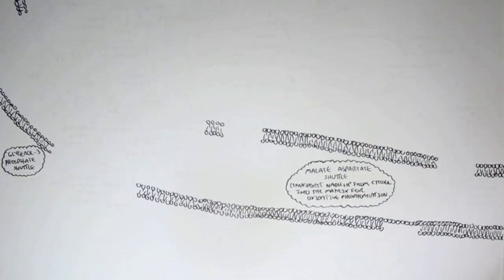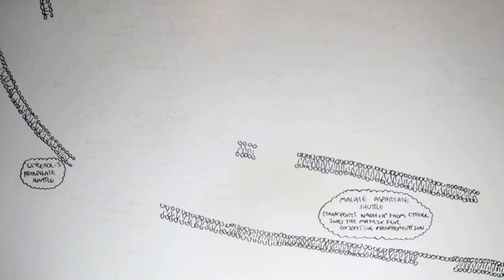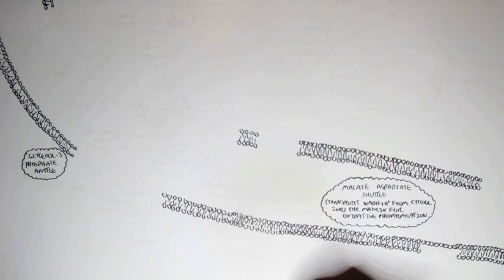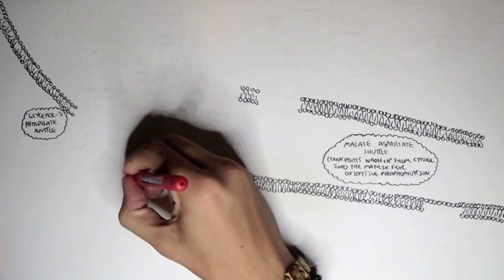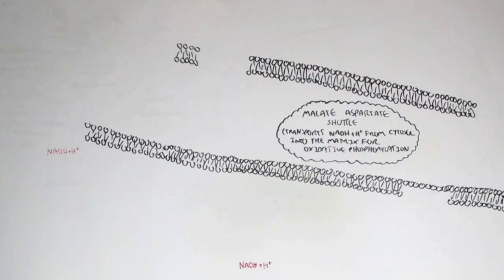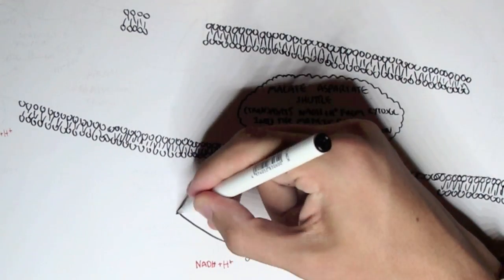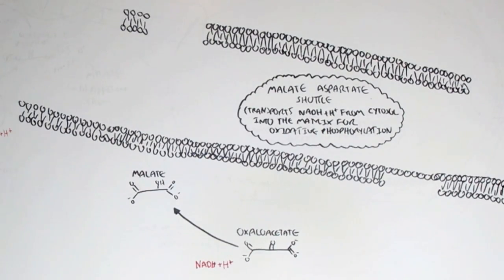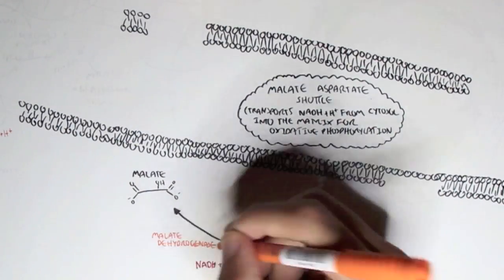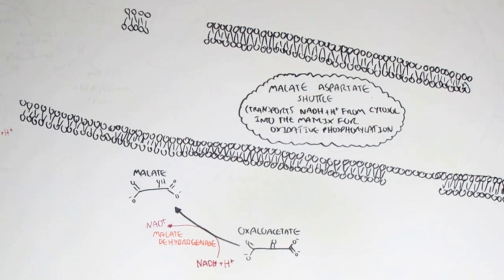Let us begin by saying that NADH plus H, the nicotinamide adenine dinucleotides, are in the cytoplasm. Let's concentrate on the malate-aspartate shuttle first, and how it transports NADHs from the cytoplasm into the mitochondrial matrix for oxidative phosphorylation. We begin with oxaloacetate in the cytoplasm, which will convert to malate with the enzyme malate dehydrogenase. From this, NADH plus H is oxidized to NAD.